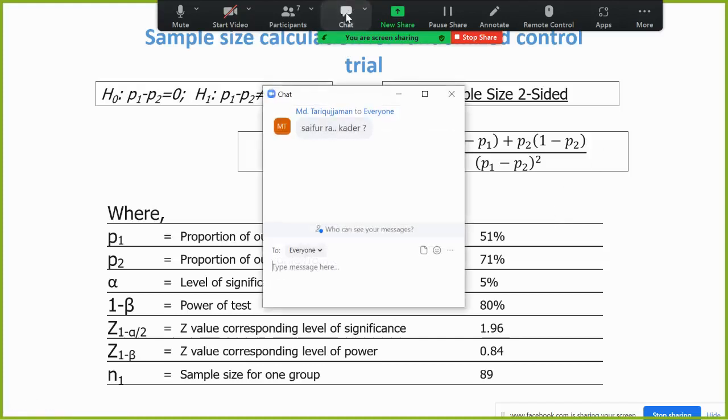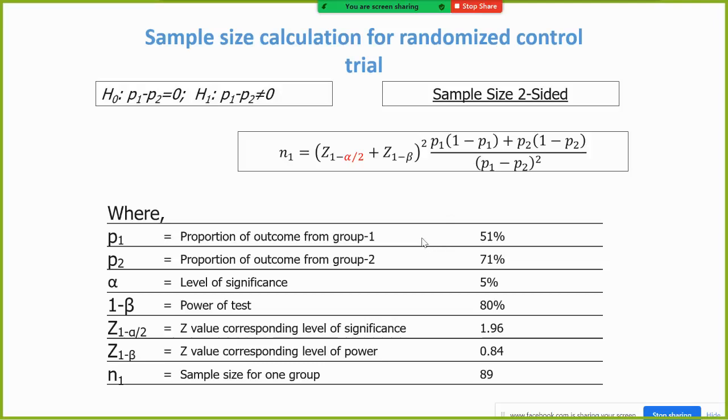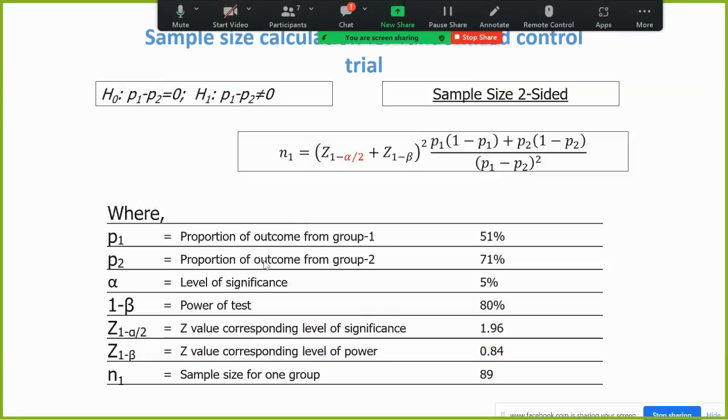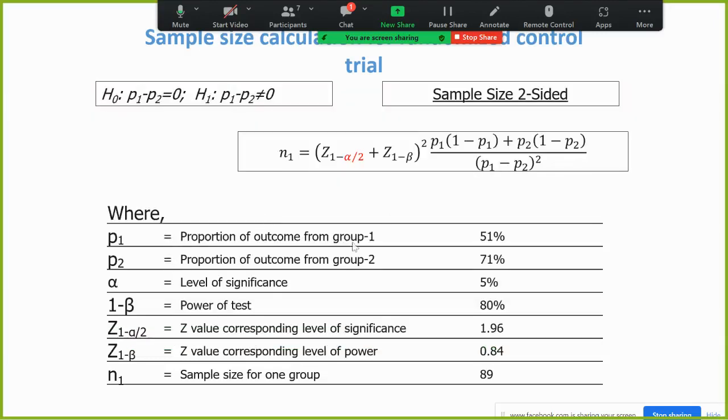Okay, and any other question? Among this table we can write in our protocol or proposal. We can write like this, but the description of this formula I have described in the previous session.